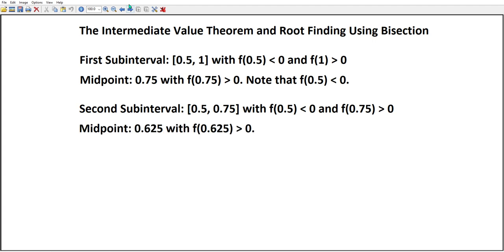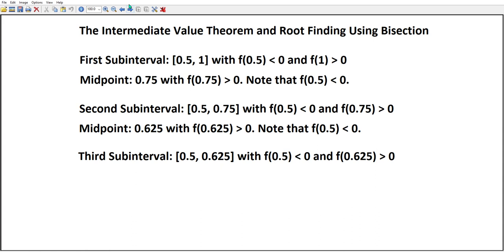We do it again. We compute the midpoint of that interval, which is 0.625. We calculate the function value there, and it's bigger than zero. We notice that at 0.5 it's less than zero. So between the two of them, we've got a root. So our third subinterval is [0.5, 0.625], with the left-hand endpoint being negative, the right-hand endpoint being positive.